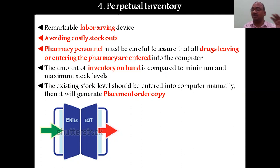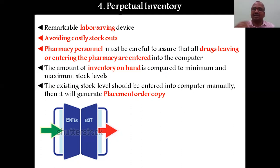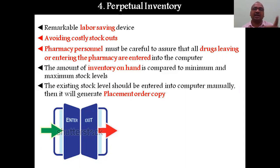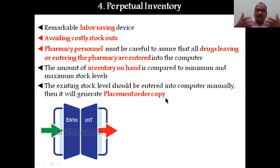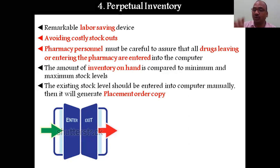The perpetual inventory system is a remarkable labor-saving device. Instead of manually checking all items daily, the computer does it automatically. It avoids costly stock-outs and pharmacy staff must carefully enter every drug leaving or entering the pharmacy. The computer then compares inventory on hand with minimum and maximum stock levels and automatically calculates placement of orders based on EOQ.